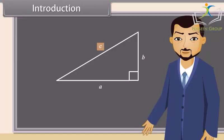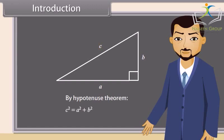Yes, C is the hypotenuse. So by the Pythagorean theorem, C square is equal to A square plus B square. We will prove some trigonometric identities.